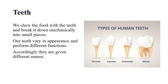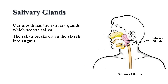Each tooth is rooted in a separate socket in the gums. Our teeth vary in appearance and perform different functions. Accordingly, they are given different names: incisors means cutting teeth, canines means tearing teeth, premolars means chewing and grinding teeth, and molars means chewing and grinding teeth. Our mouth has salivary glands which secrete saliva. Saliva makes the chewed food wet and slippery, which makes swallowing of food easier. Saliva also breaks down starch into sugar.